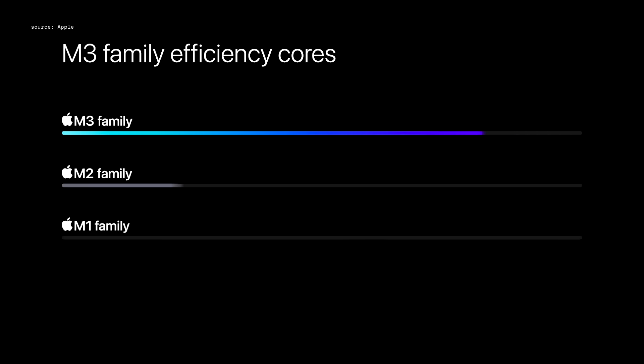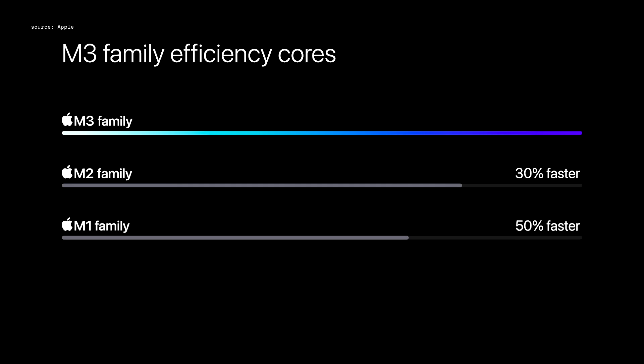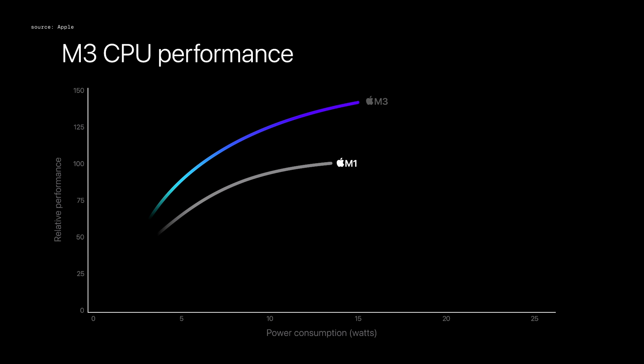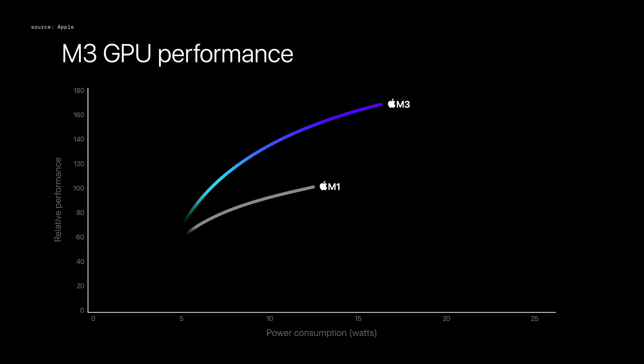while maintaining their fantastic power efficiency. And the efficiency cores take an even bigger leap in performance for many typical tasks, up to 50% faster. This architecture is able to deliver the same multi-threaded CPU performance as the M1 with just half the power. And the GPU is able to deliver the same performance as the M1, using nearly half the power as well.